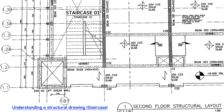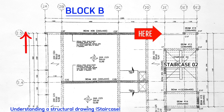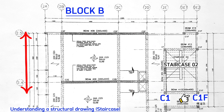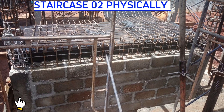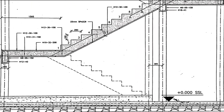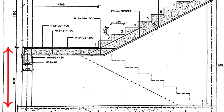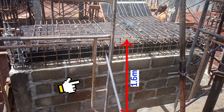Staircase 01 is for block A. For block B, this is staircase 02 that starts from gridline 2.5 here up to here, connecting column C1 and column C1F. Physically, this is column C1 and this is column C1F. According to the drawing, this first landing will be at 1.6 meters from the ground. So this is 1.6 meters here from the ground.